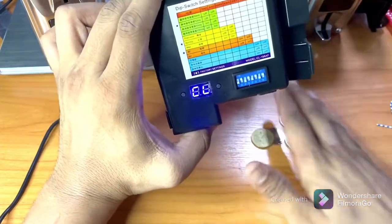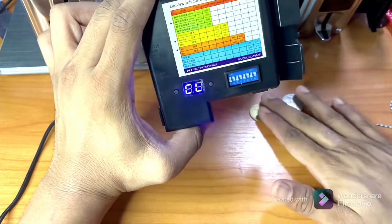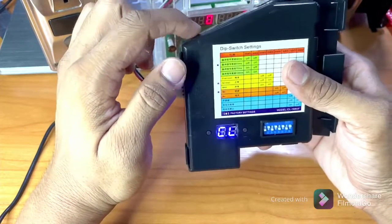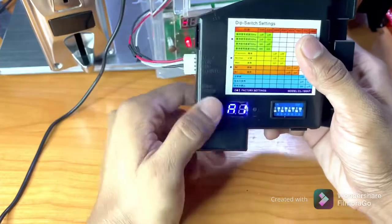Now you have to prepare coins, two of each: one bath, two bath, five bath, and ten bath. Two coins of each. After that, just press the top button two times. It will show A1, then insert the sample coin one bath, two coins.